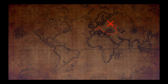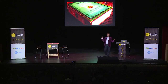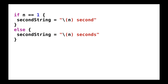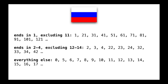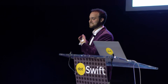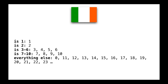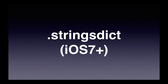Our next stop is Russia — Red Square, Russian dolls, and Tolstoy. And plurals. If we're counting seconds, in English we have 'one second' or 'two seconds', and the naive way of handling string formatting for that is straightforward. But that's wrong. In Russian there are actually three different plural variations: if the number ends in 1 and it's not 11; if the number ends in 2 through 4 and it's not 12 to 14; and everything else. Then you meet Gaelic Irish, which has five. Basically there are 16 different plural systems around the world. This was not handled in iOS until iOS 7, when Apple introduced stringsdict.